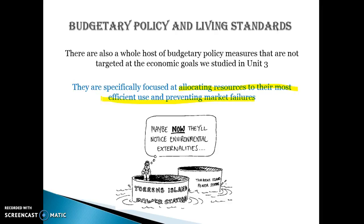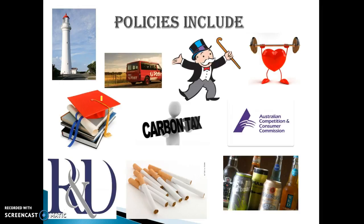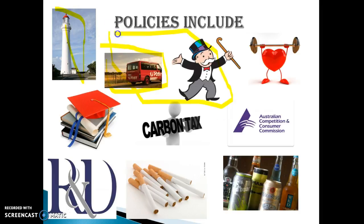So taxing cigarettes and things like that can affect equity, but their main target is to try and achieve a more efficient allocation of resources. These policies include things like providing public goods, trying to stop the power of monopolies by reducing the amount of power that monopolies are allowed to have, and a carbon tax to improve environmental conditions.